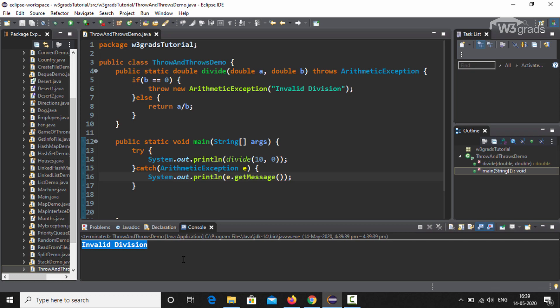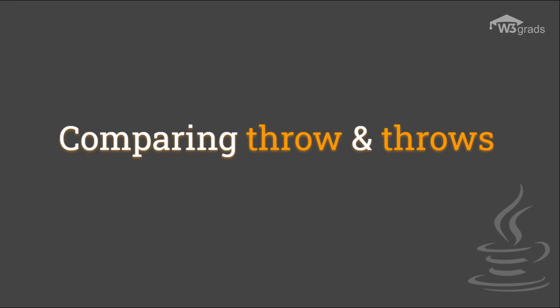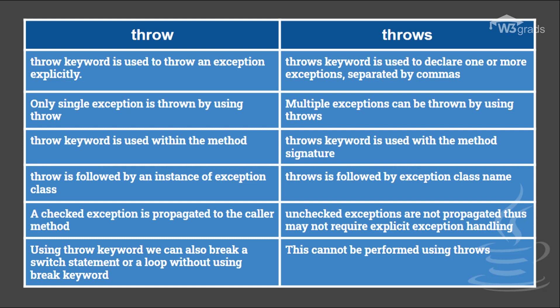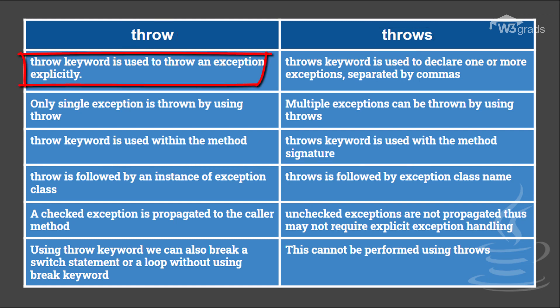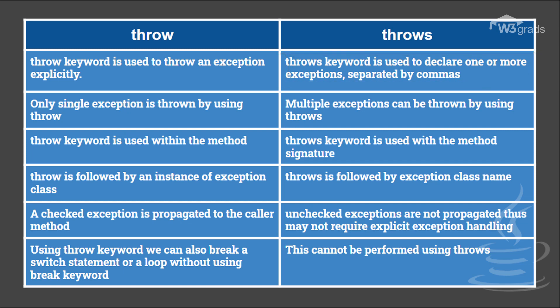Now that we have understood both keywords, let us do a comparative study. The first difference: the throw keyword is used to throw an exception explicitly, whereas the throws keyword is used to declare one or more exceptions separated by commas. As seen in our examples, a method can deliberately throw an exception using throw with an exception object, while throws indicates to programmers that the method has the possibility of throwing one or more exceptions.